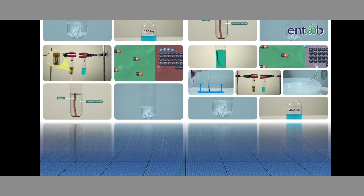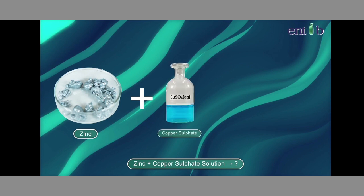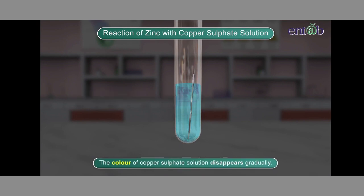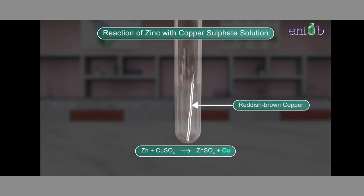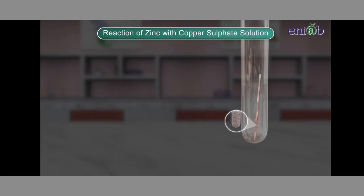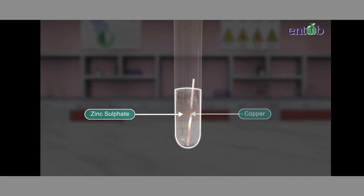Let us look at the reaction of zinc metal with copper sulfate solution. When we dip a zinc strip in copper sulfate solution, the color of copper sulfate disappears gradually due to the formation of zinc sulfate, and the red-brown copper metal is deposited on the zinc strip. In this reaction, zinc displaces copper, being a more reactive metal.